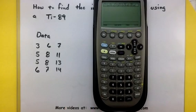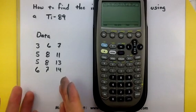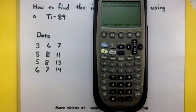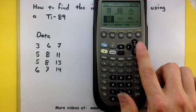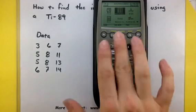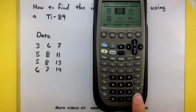First we need to get all of this data inside the calculator. So you'll notice I'm on the home screen. I'm going to press my Apps button. Once I do that, I want to scroll over to my Data Matrix Editor, and then press Enter.